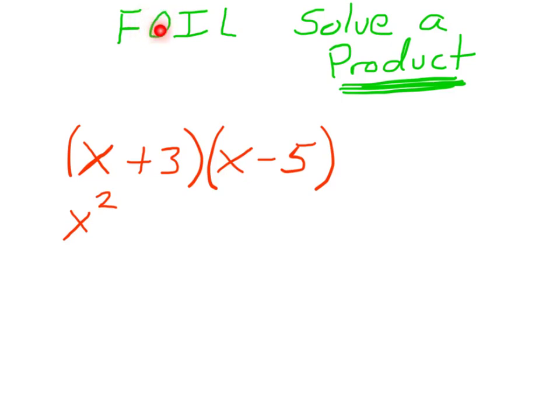The next part, the O, that's the outer. So I take the outer parts of these things, which is x times a negative 5. That would be a negative 5x.